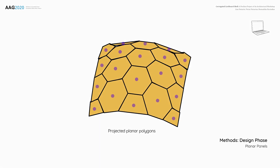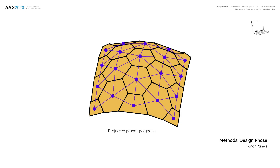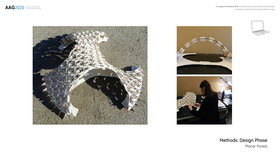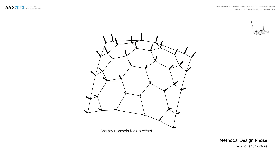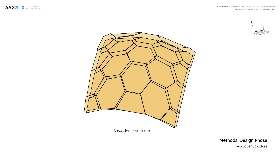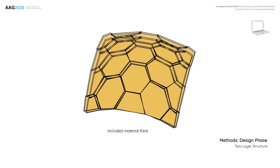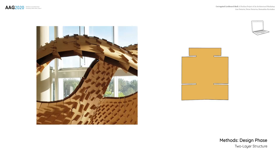We get the planar hexagonal panels by projecting polygonal mesh faces onto their average planes. To create diagonal connections, joints, and indices for fabrication and assembly, we continue using the connectivity graph from the initial non-projected mesh. After inspecting a single-layer test model, a second layer was introduced to obtain greater stiffness, adding resistance to twisting. A two-layer system was created by offsetting the polygonal mesh using its vertex normals. Several physical tests were made to determine the right distance between the two layers, and for the pavilion structure, a distance of 9 cm was selected.